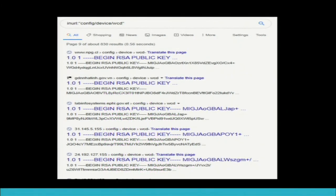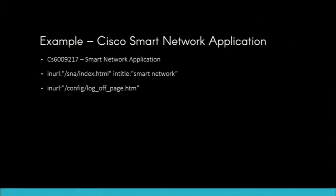Going back to enumerate this further, starting from a config device Google dork, I started finding more of these devices on the internet. The web application uses C values as identifiers. I developed Google dorks — one specifically will give you Smart Network Application devices, another using the SNA index and smart network URL, and another using config log-off page. Do your intelligence work, because there's lots of interesting stuff in documentation that nobody wants to read.